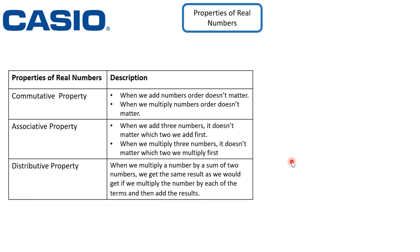Properties of real numbers. In this section, we will explain three main properties: the commutative property, the associative property, and the distributive property. For the commutative property, when we add or multiply numbers, the order does not matter. For the associative property, when adding or multiplying three numbers, it doesn't matter which two we operate on first. For the distributive property, when we multiply a number by a sum of two numbers, we get the same result as multiplying the number by each term separately and then adding the results.